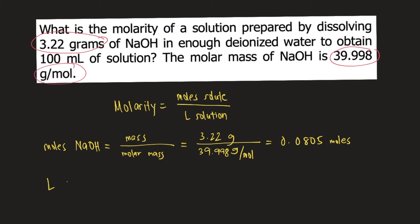Then we solve for the liters of solution. In the problem, we are given 100 mL of solution. We need to convert 100 mL into liters, which equals 0.100 liters.